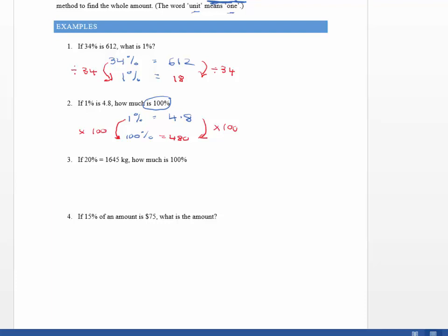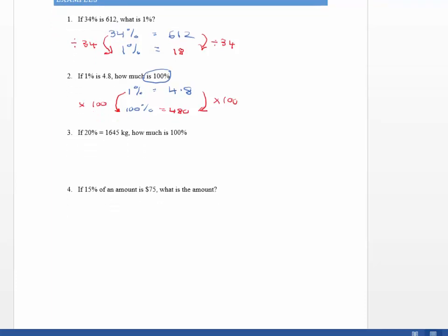So let's look at the sort of more typical sorts of questions you're going to be asked. 20% is 1645 kilograms, how much is 100%? Well we've started the setting off for us, 20% is equal to 1645 kilograms. Now this is what we always do. We kind of always do step 1, like in example 1, we always try and find 1% first. And once we've found 1%, we can easily find 100%.